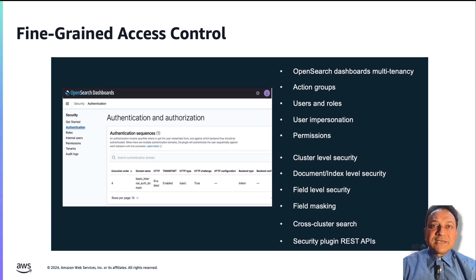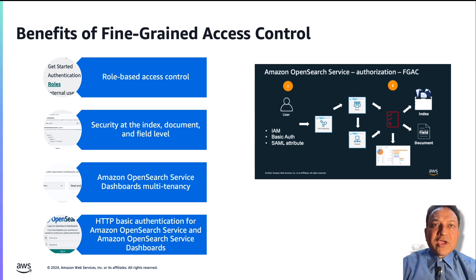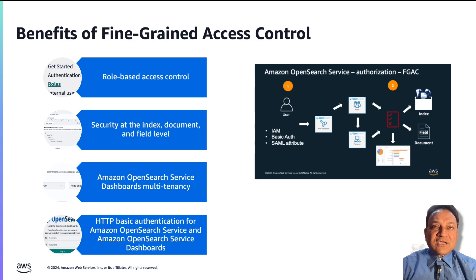This granular level of control is not possible with the other access control mechanisms. Today we will dive deeper into how fine-grained access control works. Fine-grained access control offers the following benefits: role-based access control; security at the index, document, and field levels; multi-tenancy of the Amazon OpenSearch Service dashboards; and HTTP basic authentication for Amazon OpenSearch Service and its dashboards.